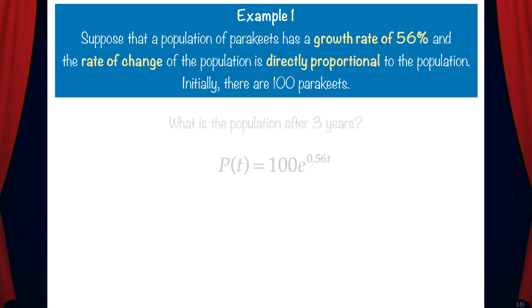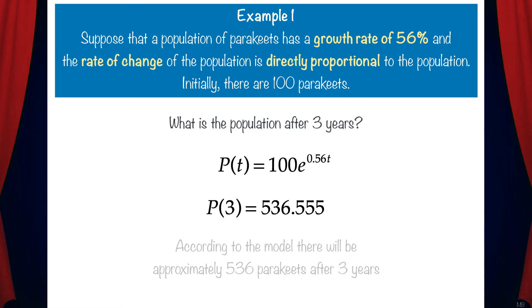Now we can determine the population after three years. We just need to plug in three to the equation and that gives us p of 3 equals 536.555. So according to the model, there will be approximately 536 parakeets after three years.